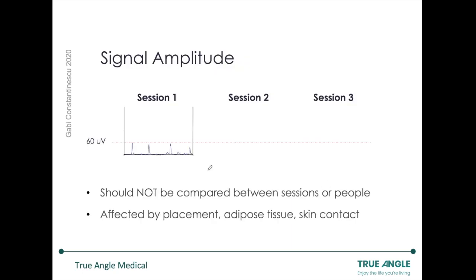Let's start off with one thing that I learned much too late into using SEMG in clinic, and that is that signal amplitude should not be compared between sessions or people. Many years ago, I remember sitting down with patients, I had them hooked up to the K-Pentax, and I diligently marked down their amplitude trial after trial. After their treatment, I would make a report graphing their amplitude changes. So if I had a patient come in for session number one, I would sit down and go, okay, your swallowing muscles are contracting at about 60 microvolts — that's great. And the next day they'd come in and I'd go, that's odd, you're not doing so well today, you must be having an off day.